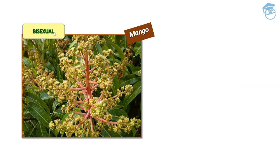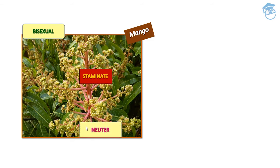Mango is bisexual as it has both androecium and gynoecium, but it sometimes shows only staminate (male) flowers or neuter flowers without androecium or gynoecium. Such a flowering plant that shows more than one sexual condition is called polygamous. Now we will talk about the insertion of floral whorls.